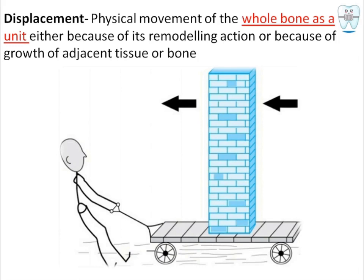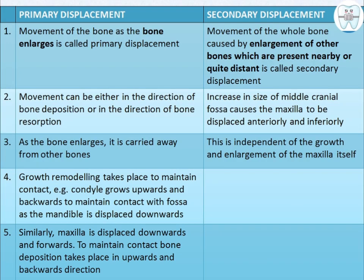Displacement could be of two types: primary displacement and secondary displacement. Primary displacement is the movement of bone as the bone itself enlarges. As the bone enlarges, movement can be either in the direction of bone deposition or in the direction of bone resorption.